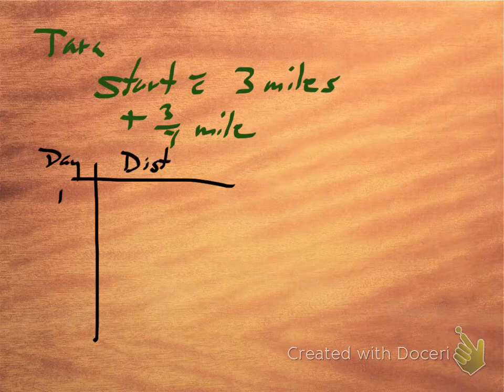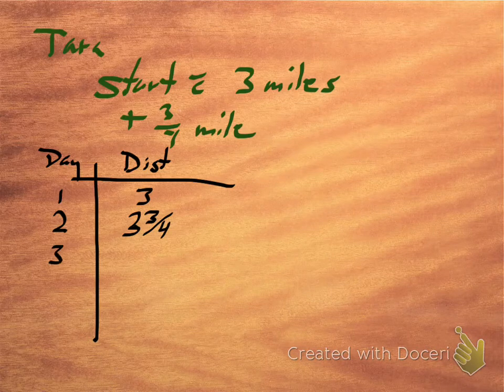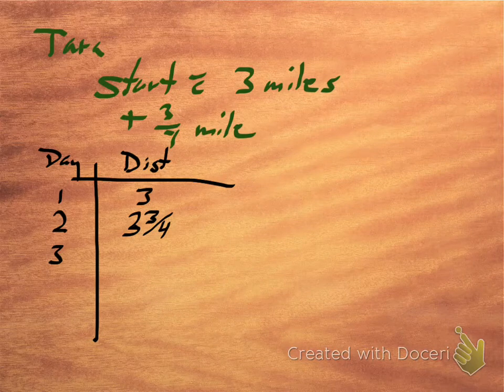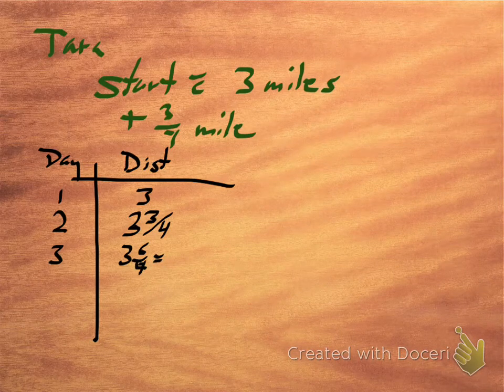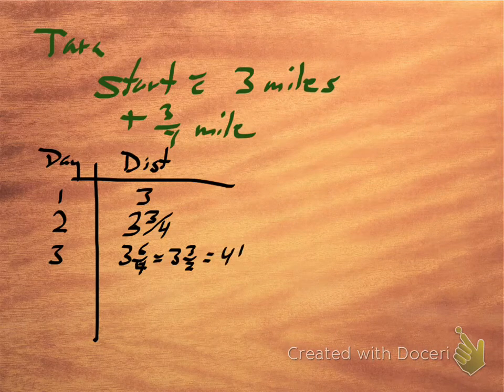So on day one, the problem told us she starts going three miles. On day two, she goes an extra three-quarters of a mile, so she goes three and three-fourths of a mile. On day three, we have to add three-fourths to that. So that will give us three and six-fourths. We can't really do that. So three and six-fourths reduces to three and three-halves, which of course reduces to four and a half.